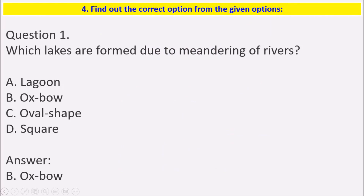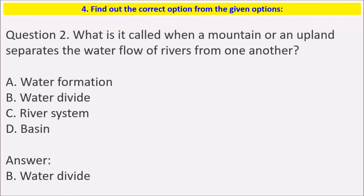Question 4: Find out the correct option from the given options — which lakes are formed due to the meandering of rivers? Oxbow lakes are the lakes which are formed due to the meandering of rivers.